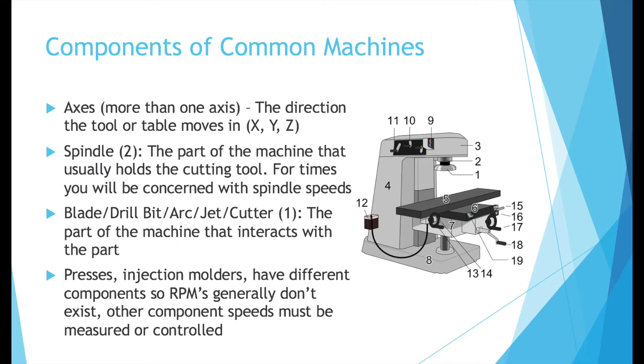The spindle refers to the number two on the picture on the right side. This is the part of the machine that usually holds the cutting tool. For many machine processes, you will be concerned with spindle speeds. The blade, drill bit, arc, jet, cutter refer to the number one on the diagram, and there can be many other names as well. This is the part of the machine that interacts with the part depending on what type of machine you're doing. So a blade can cut, a drill bit can drill a hole, etc.